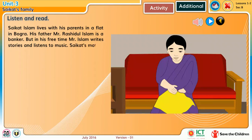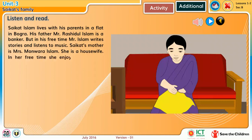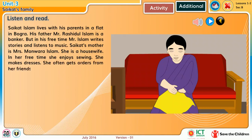Shoikot's mother is Mrs. Munora Islam. She is a housewife. In her free time, she enjoys sewing. She makes dresses. She often gets orders from her friends and neighbors.